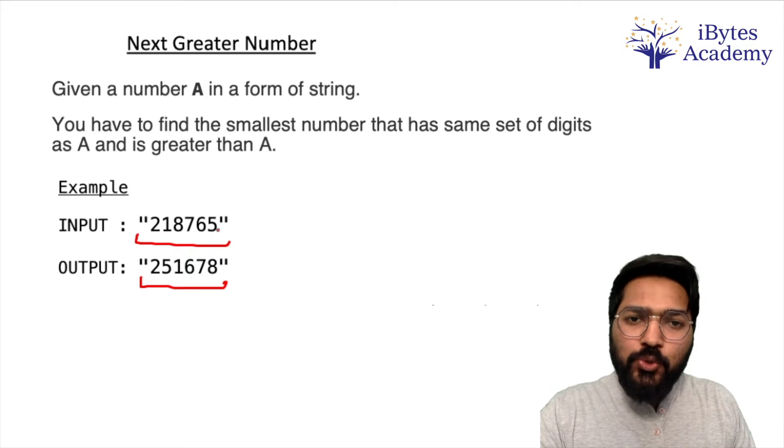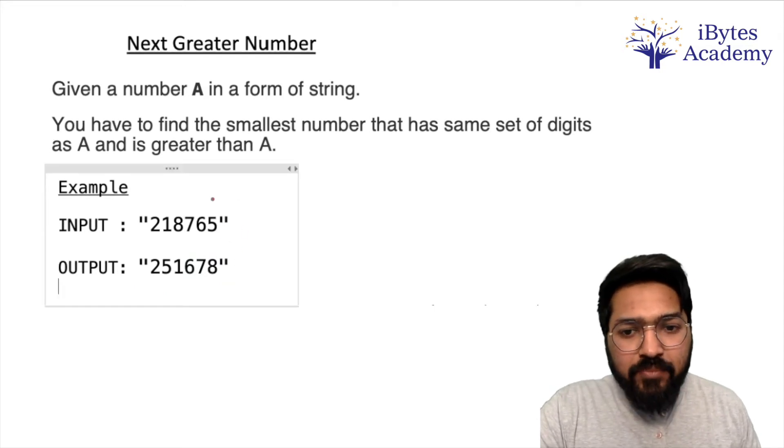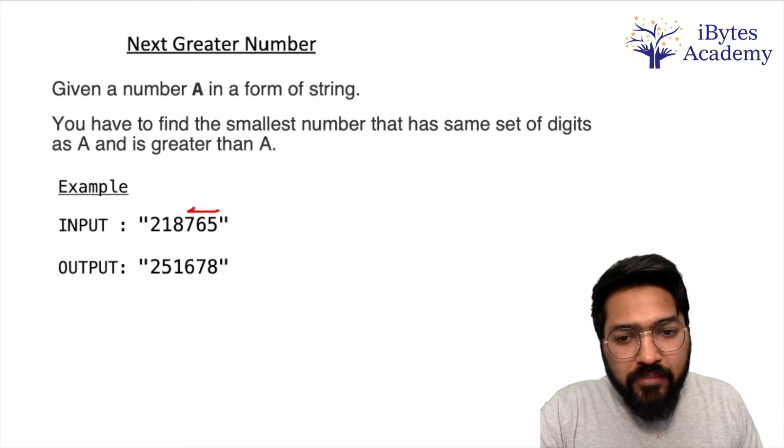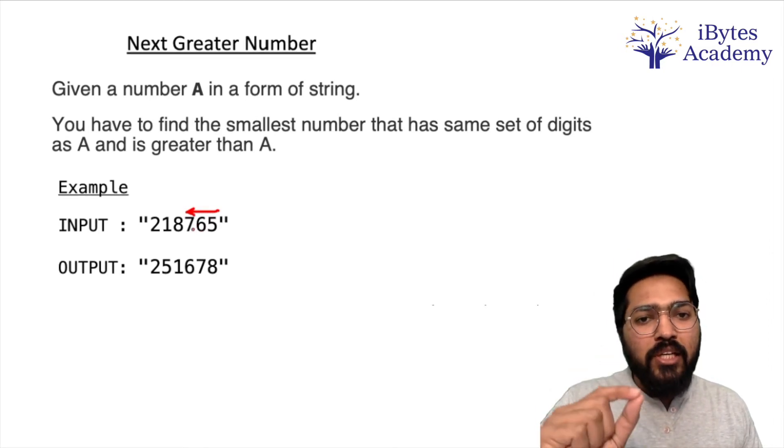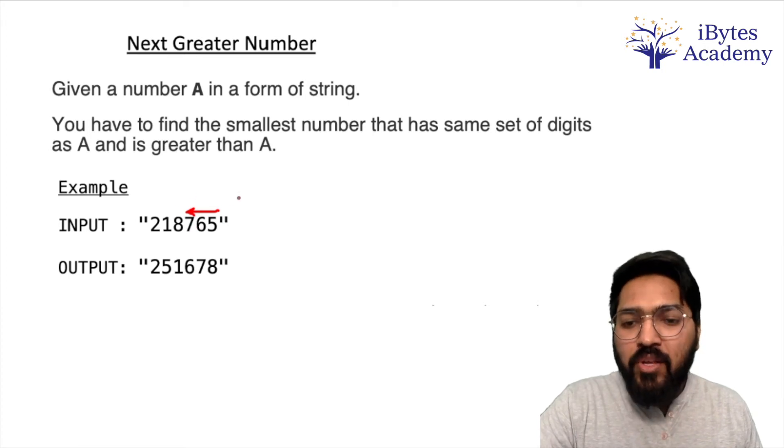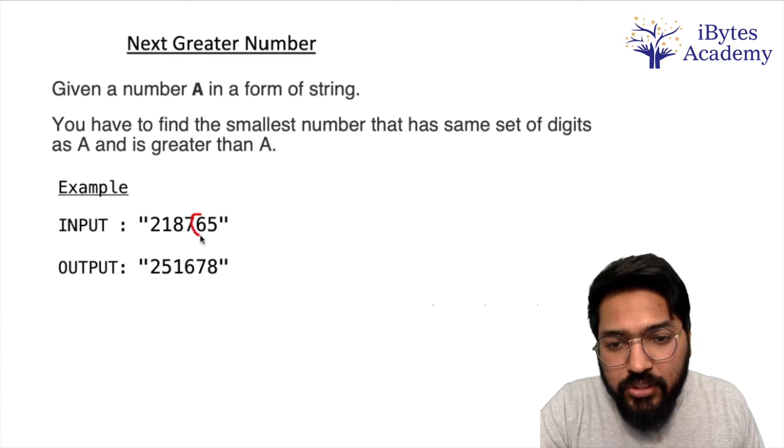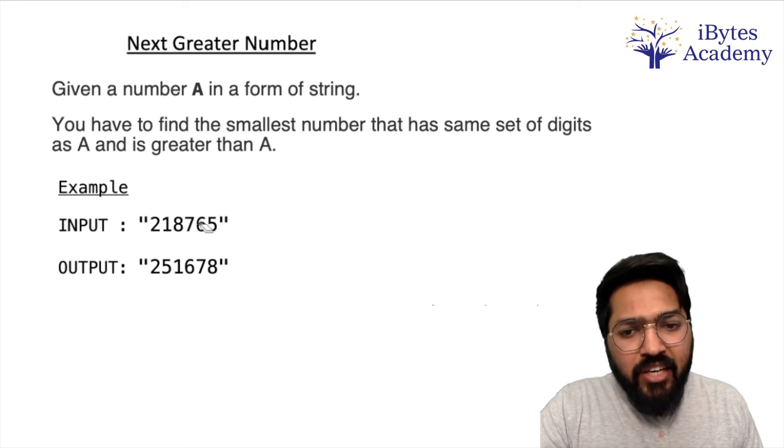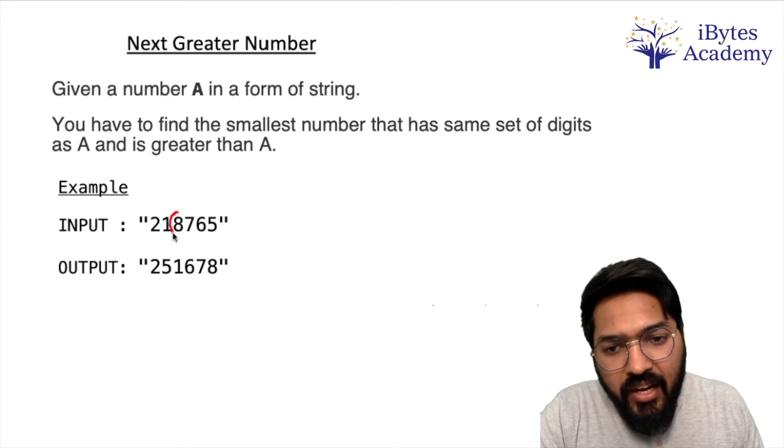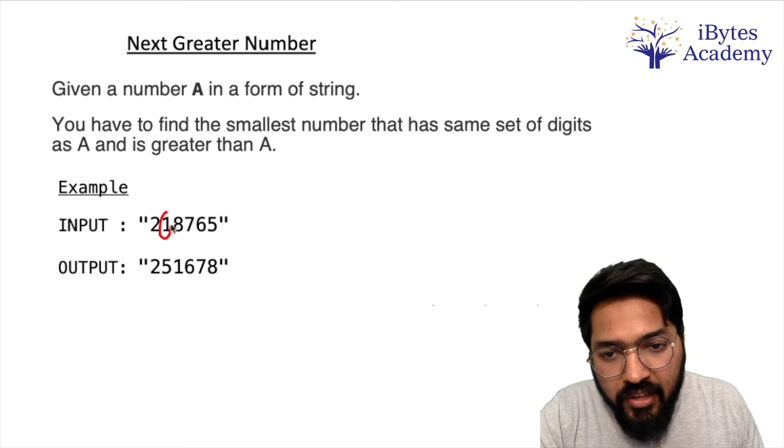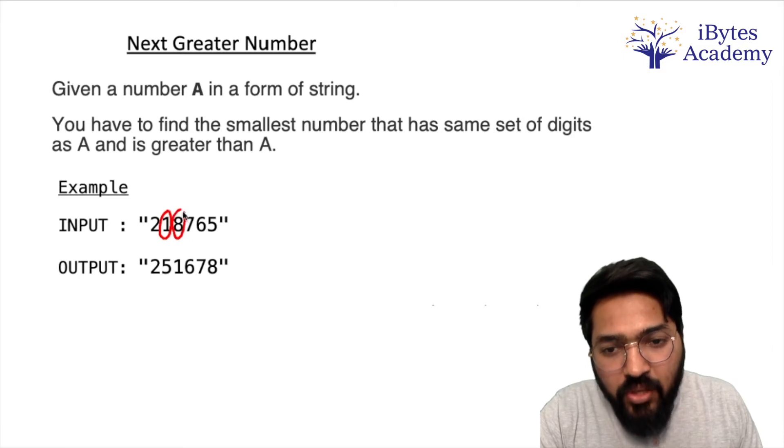Once you pause the video and think about it yourself, then look at my solution. So the idea is that we will start from the back and proceed until we find the next element which is smaller than the previous element. First let's look at the last two digits, that is six and five. Since six is greater than five, we will proceed further. Now again, seven is greater than six, we will proceed further. Again, eight is greater than seven, so we will proceed further. But now one is less than eight, so we will pause over here.